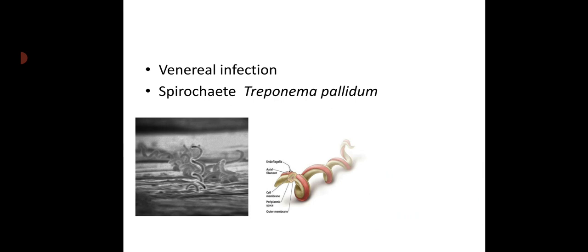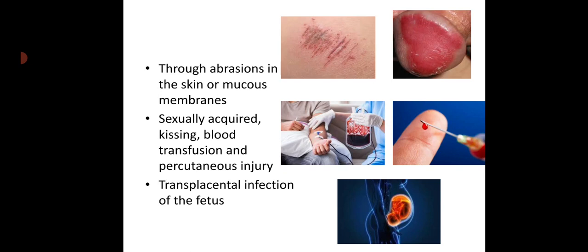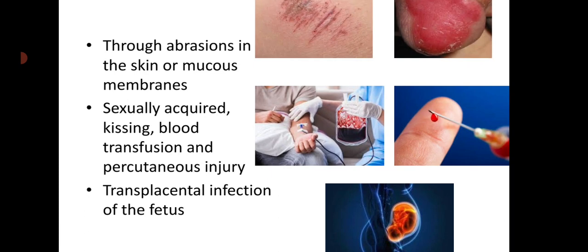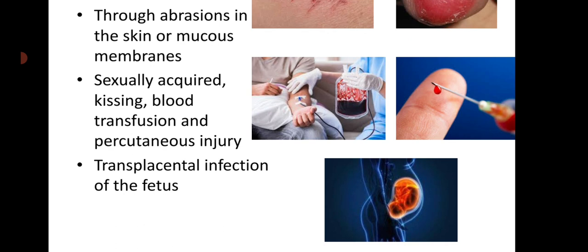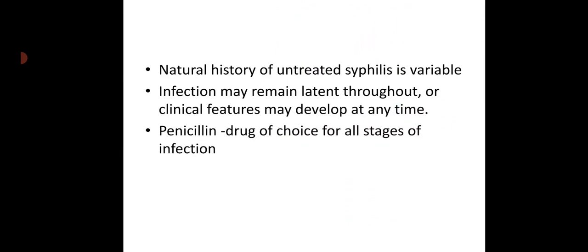Hello all, today we will discuss about syphilis. Syphilis is a venereal infection caused by the spirochete Treponema pallidum. The pathogen enters the body through abrasions in the skin or mucous membranes, sexually acquired, kissing, blood transfusion, percutaneous injury, and transplacental infection of the fetus. The natural history of untreated syphilis is variable; infection may remain latent throughout, or clinical features may develop at any time. Penicillin is the drug of choice for all stages of infection.